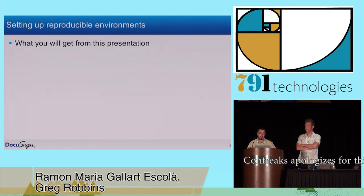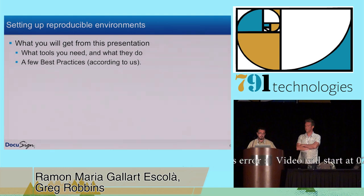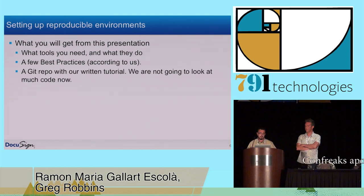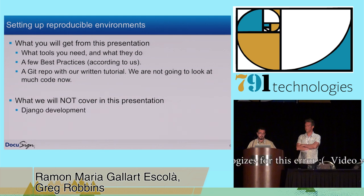So when we talk about setting up reproducible environments in this presentation, we're going to talk about the tools, what they do, and some best practices — at least according to us. We're not gurus. We're really nice guys, but we're not world-class experts on this. We're just sharing the system that we've used, that has worked for us and has given us consistently good results. We're sharing the Git repo that has the complete written tutorial that Ramon put together. And we're not going to look at a whole lot of code right now — this is more about environments, not covering Django development.